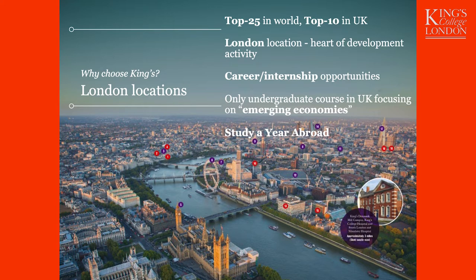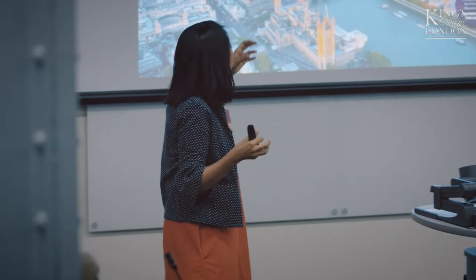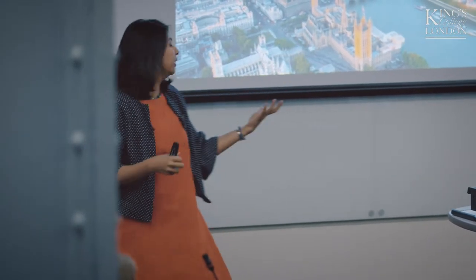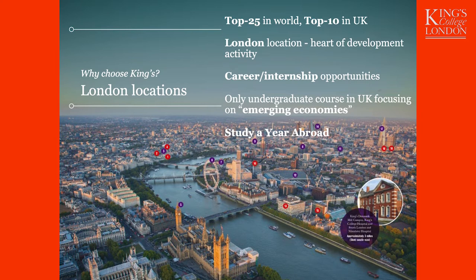King's has a very effective and efficient career service with a lot of connections across the developing world in terms of internship and job opportunities, which is centrally managed but focused on the student and their preferences. That is something that really builds on the London location. This degree program is a three-year program, but it allows you the opportunity of taking out a year abroad between your second and third year, going to take courses and modules at one of our partner universities in your geographical area of preference.